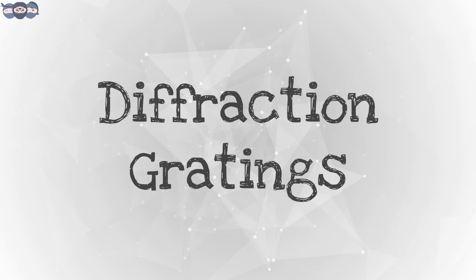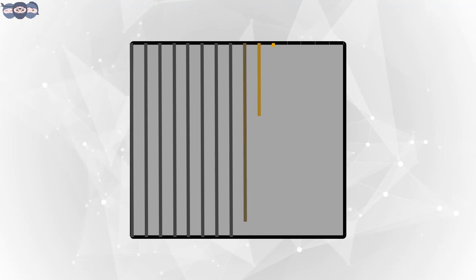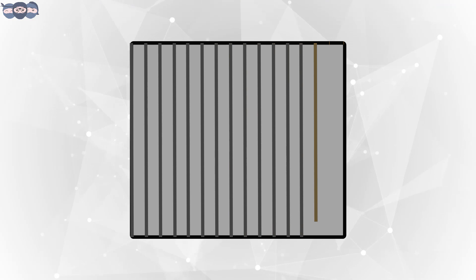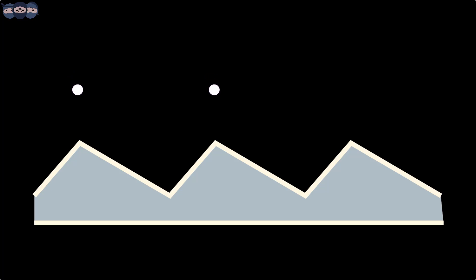The diffraction grating is also used to separate the wavelengths of light. The diffraction grating is constructed by etching closely spaced parallel grooves on a reflecting surface. When light falls on this grooved surface, it acts as a narrow mirror and light diffracts.